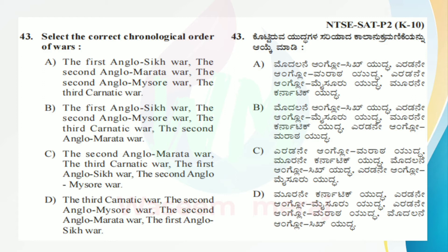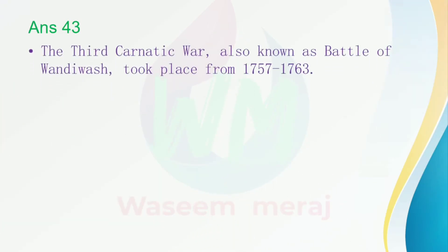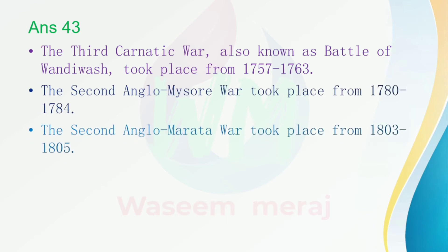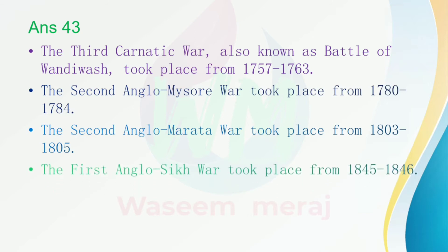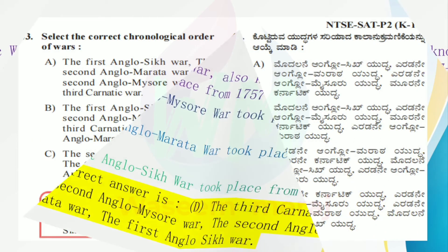Answer 43: The third Carnatic war, also known as the Battle of Wandiwash, took place from 1757 to 1763. The second Anglo-Mysore war took place from 1780 to 1784. The second Anglo-Maratha war took place from 1803 to 1805. The first Anglo-Sikh war took place from 1845 to 1846. The correct answer is D: the third Carnatic war, the second Anglo-Mysore war, the second Anglo-Maratha war, the first Anglo-Sikh war.